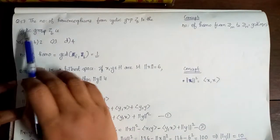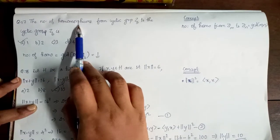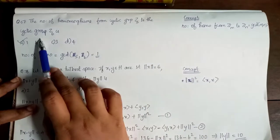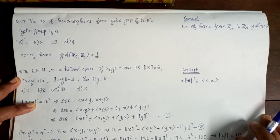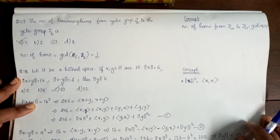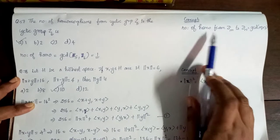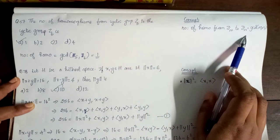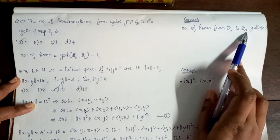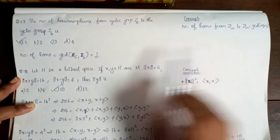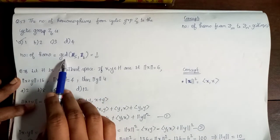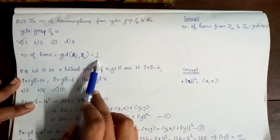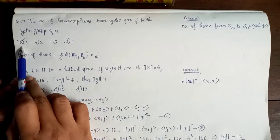Next question: the number of homomorphisms from cyclic group Z5 to cyclic group Z6. We directly apply the formula: the number of homomorphisms from Zm to Zn equals GCD(m, n). So here, GCD(5, 6) equals 1. So option A is correct.